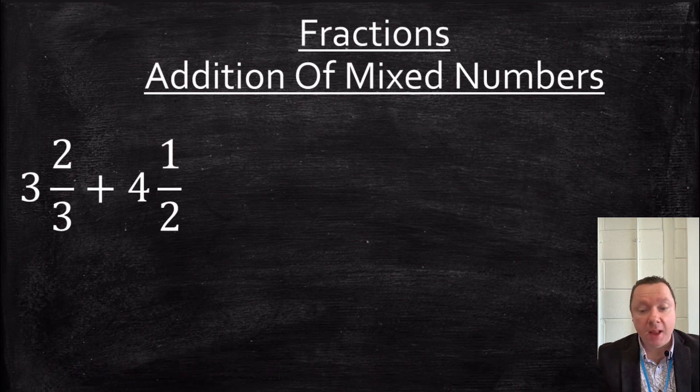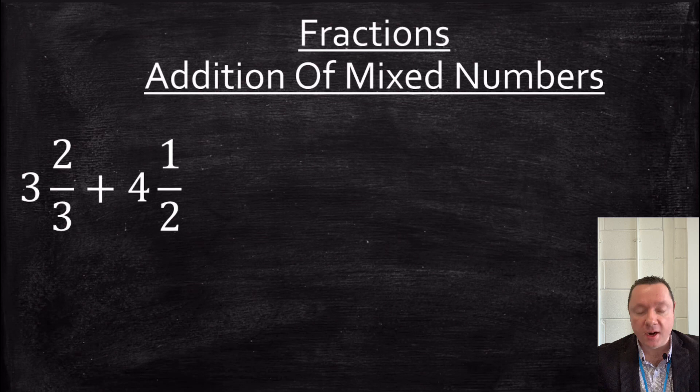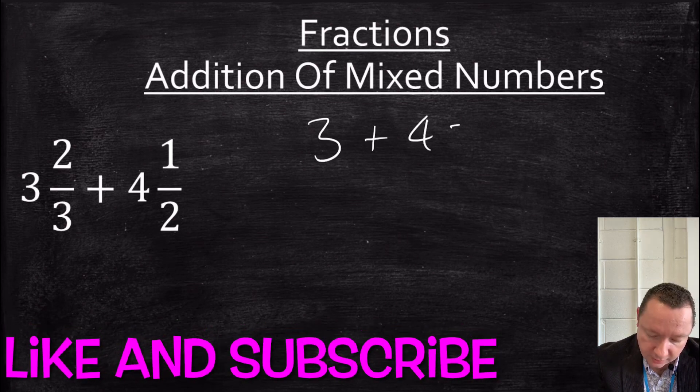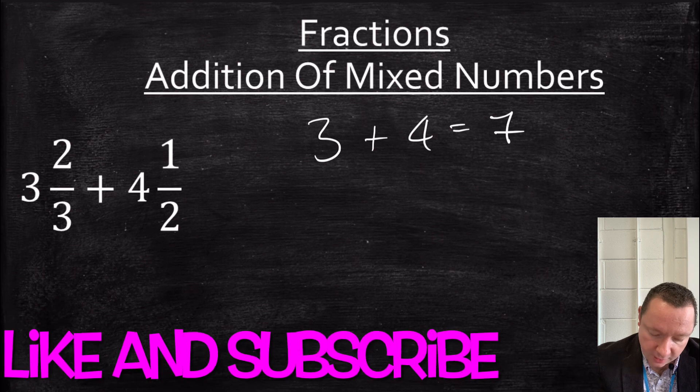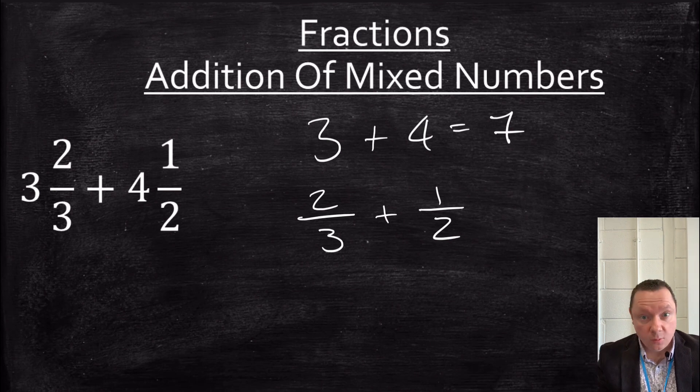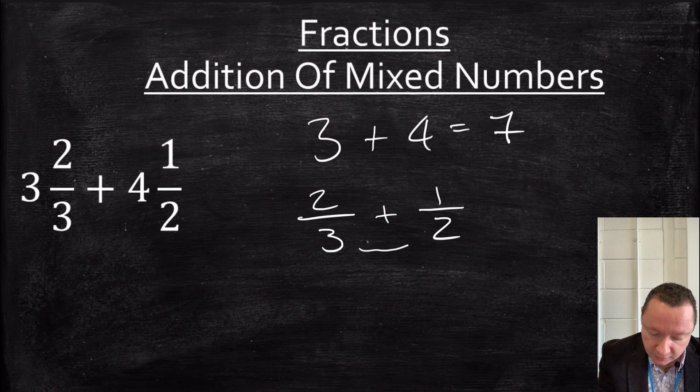So let's start with an addition of mixed numbers. We've got 3 and 2 thirds plus 4 and a half. So we can do 3 plus 4 to start with and get 7, and then we've still got 2 thirds plus 1 half. Adding fractions means we need a common denominator. Easiest way to do that is times the denominators together. So 2 times 3 is 6.